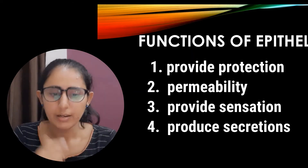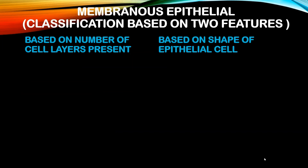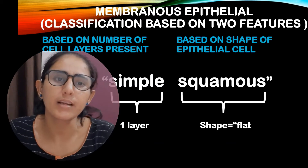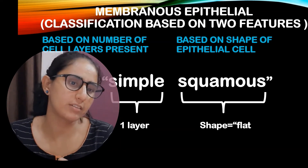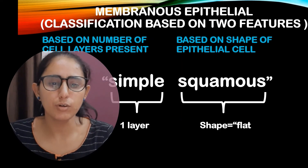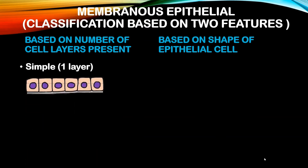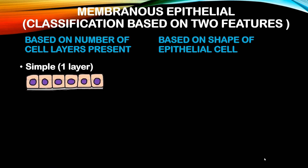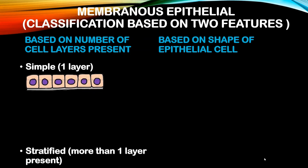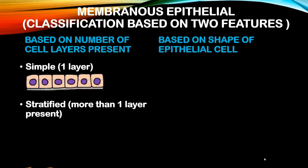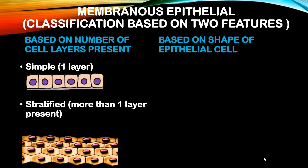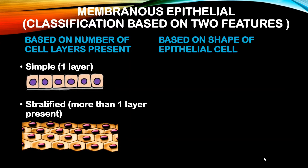Membranous epithelium is classified based on two features: the number of layers present and the shape of the epithelial cells. The first name always indicates the number of layers, while the second name indicates the shape. If only one cell layer is present, we call it simple epithelium — found where rapid absorption or diffusion occurs. If more than one layer is present, we call it stratified epithelium, located where protection against abrasion, friction, and bacteria is needed, like the skin.